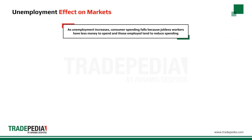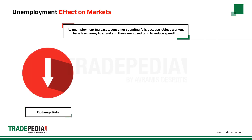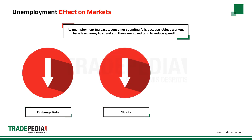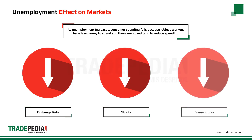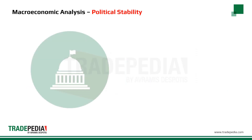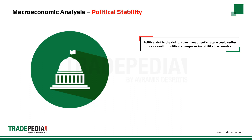As unemployment increases, consumer spending falls because jobless workers have less money to spend, and those employed worry for the future and also tend to reduce spending. When a high level of unemployment exists, economic growth suffers and demand drops, eventually resulting in a depreciation in the value of the currency. An increase in unemployment leads to lower consumer spending, which hurts businesses and drives stock prices down. The same effect is seen across commodity prices as demand decreases due to lower production levels.